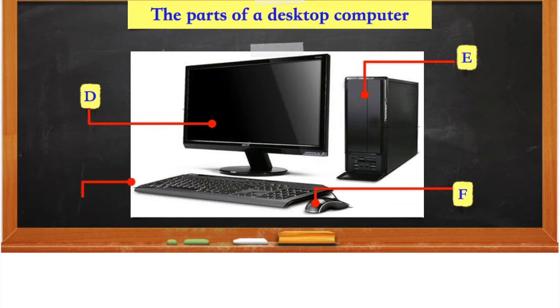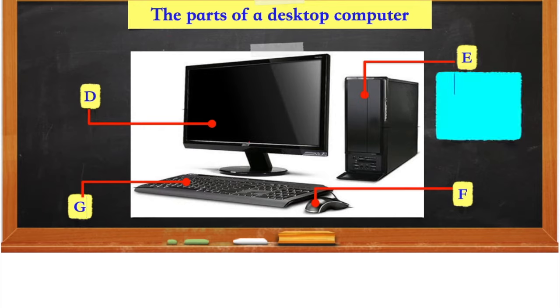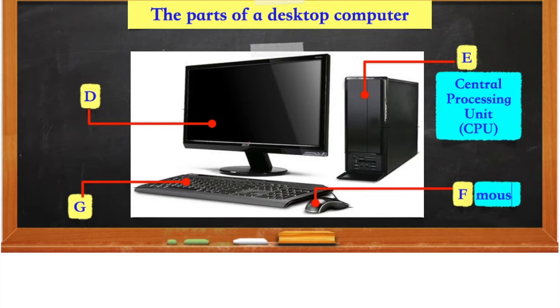Which part of the device controls and processes data? The part that controls and processes data is labelled E. It is called a central processing unit, or the CPU.